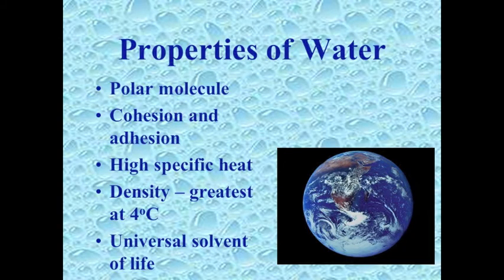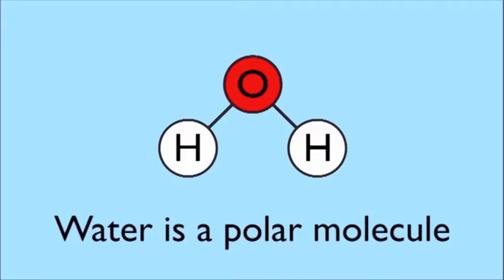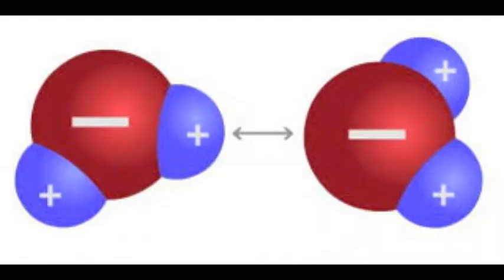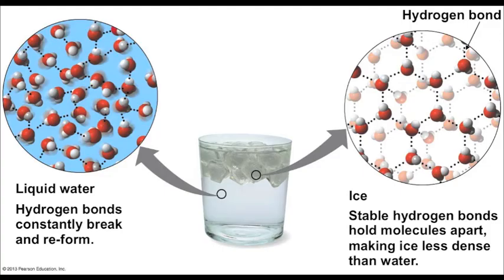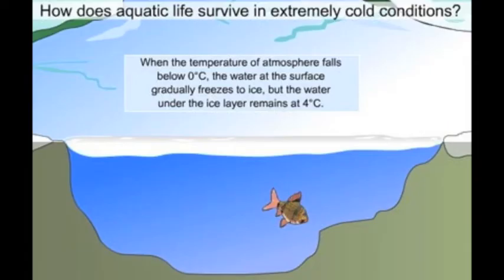Water properties occur because water is polar — it has oppositions, positive and negative. What happens when they freeze? Ice has a lighter density, that means ice floats. Lakes don't freeze solid when it's cold.